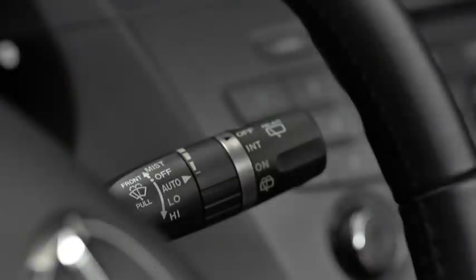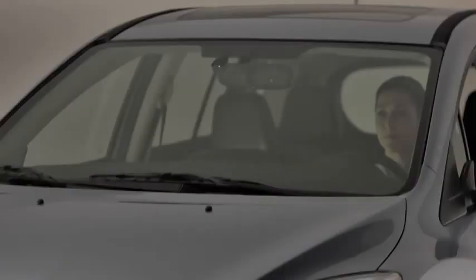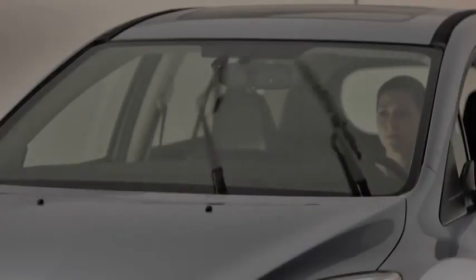For automatic wiping, pull the lever down to auto. When the wiper lever is in the auto position, the rain sensor detects the amount of rainfall on the windshield and turns the wipers on or off automatically.